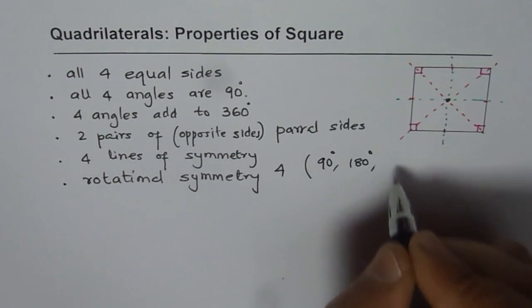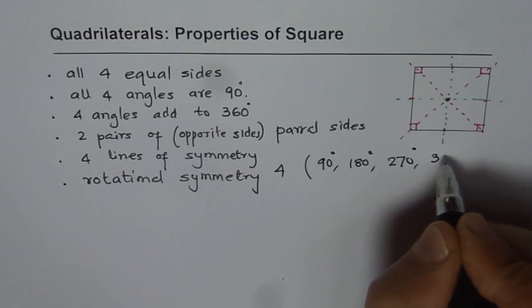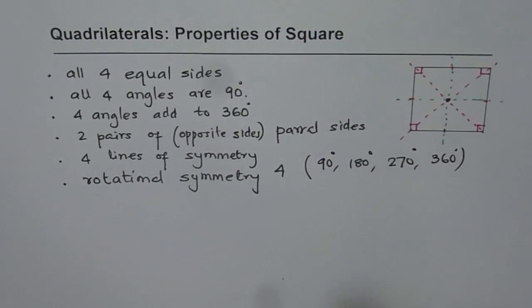Since rotation by 180 degrees, 270 degrees and 360 degrees gives you exactly the same square. Okay, what else can we say about the square?